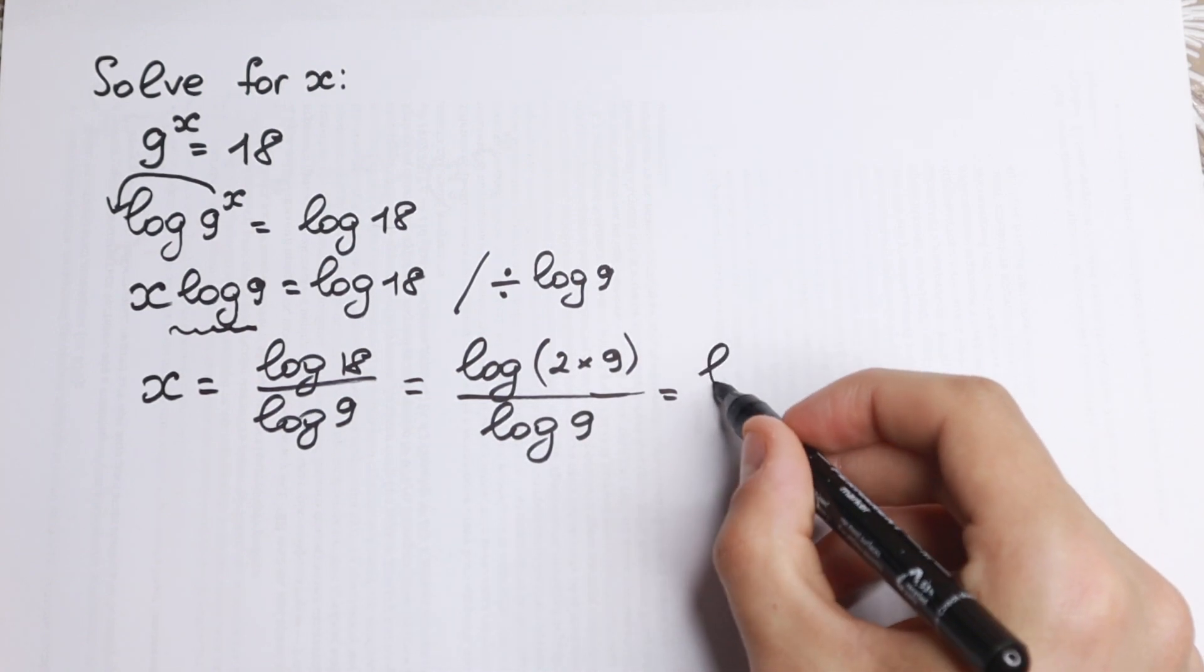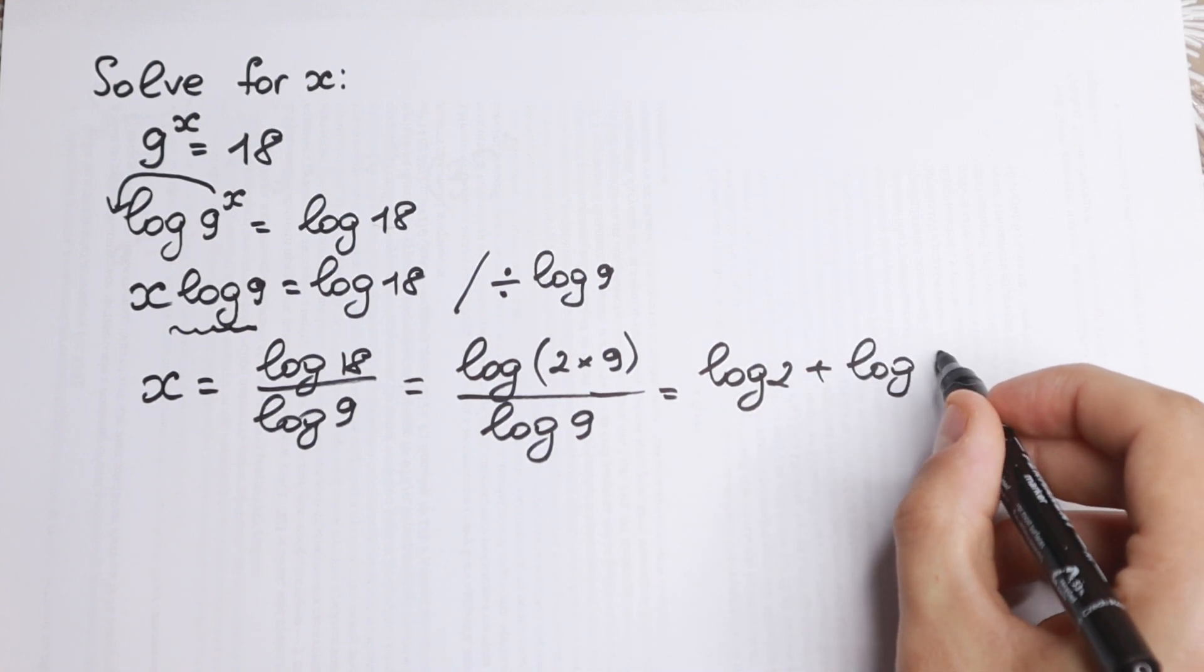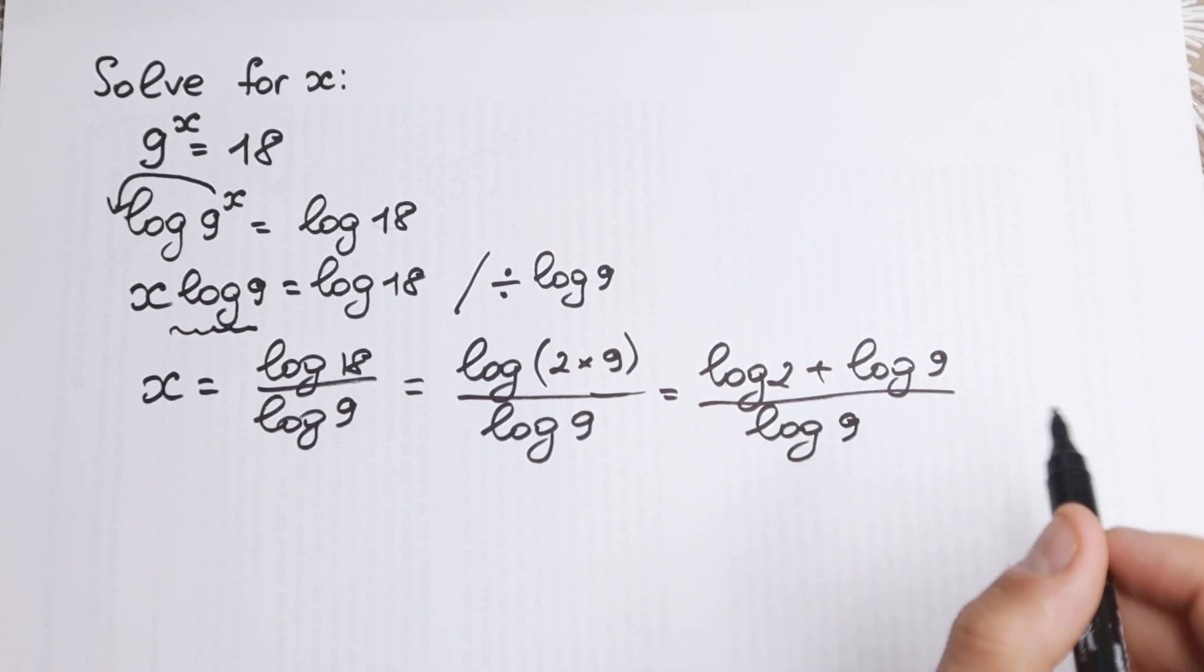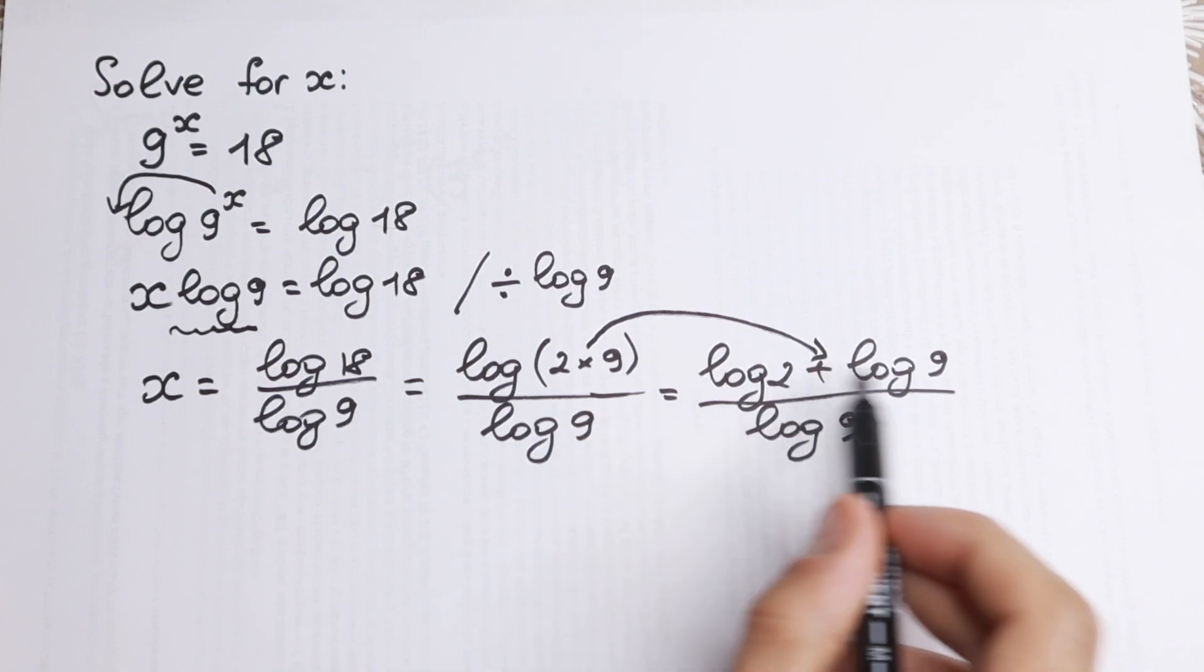This is log 2, this is the log property - log 2 plus log 9. And we divide by log 9. So I hope you understand this step. If you have multiplication, you can write it as the sum of 2 logs.